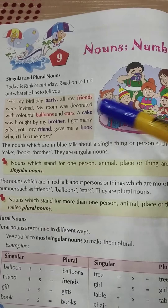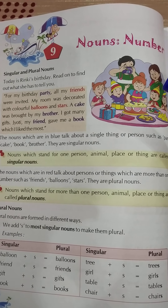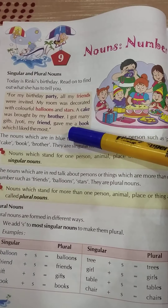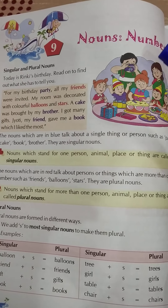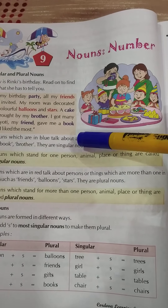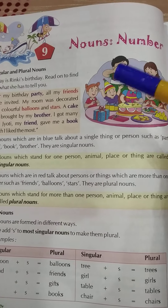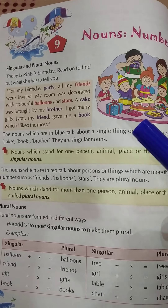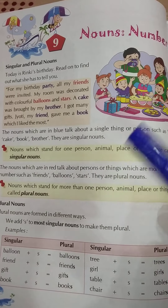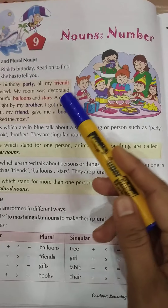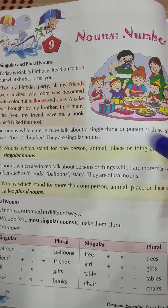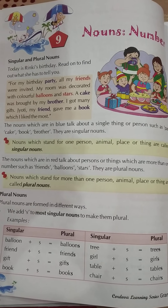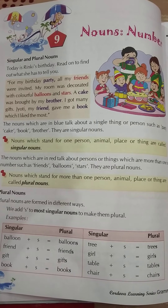The blue words — party, cake, book, brother, friend — they are all single words; there is no S in them. They are not plural. Cake is one, brother is one, friend is one, and book is also one. These are all nouns because they are names, and they are in singular form — that's why they are called singular nouns.